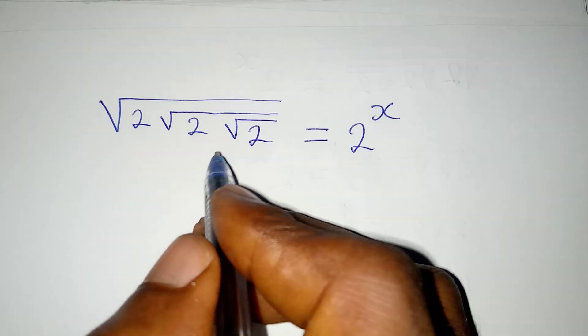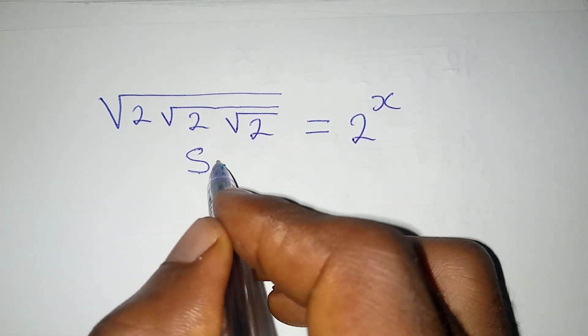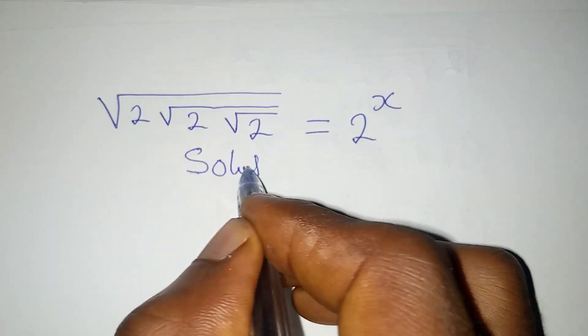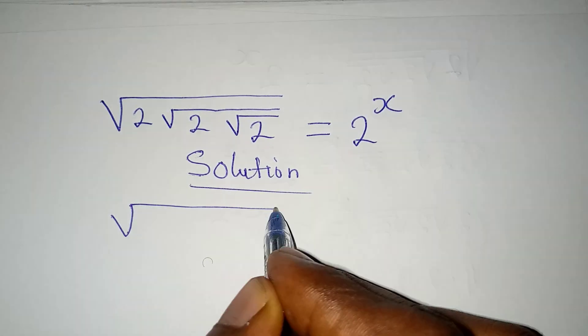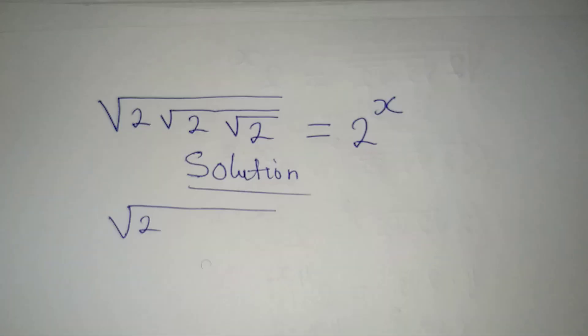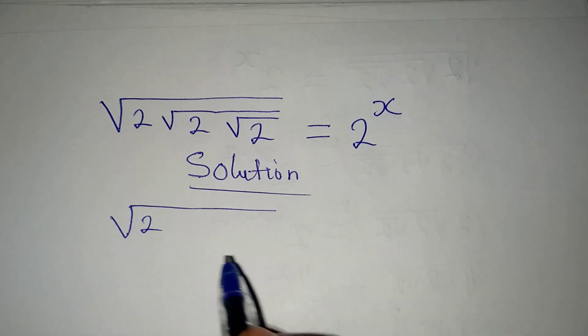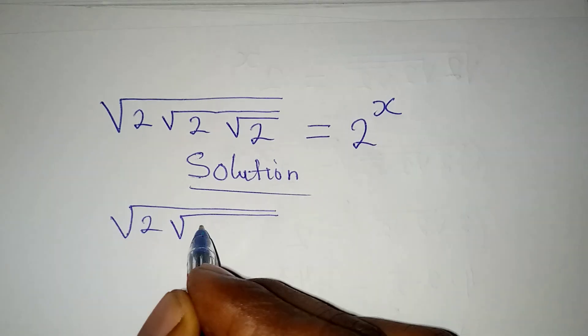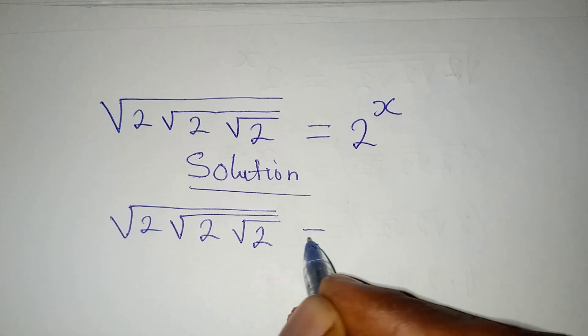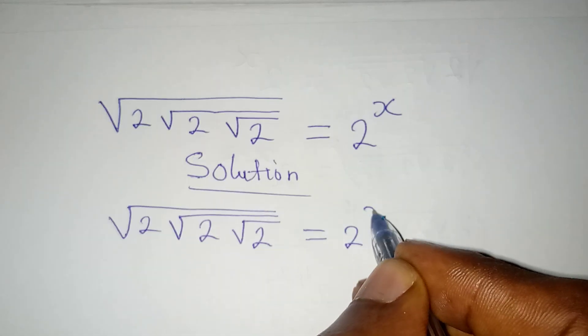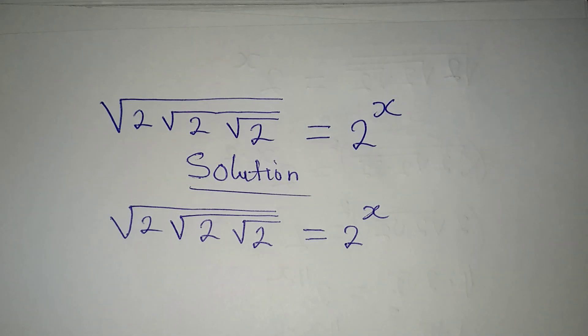Hello everyone, let us solve this problem very quickly. We have square root of 2, then square root of 2, then square root of 2 to be equal to 2 to the power of x.